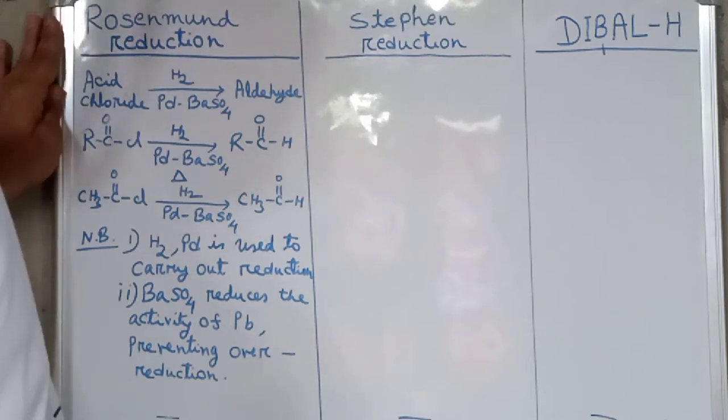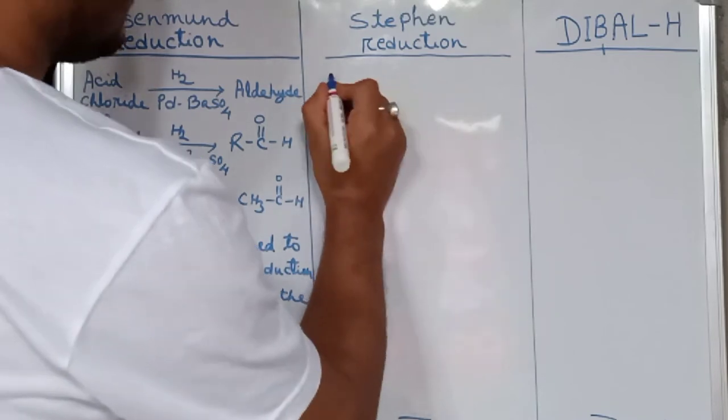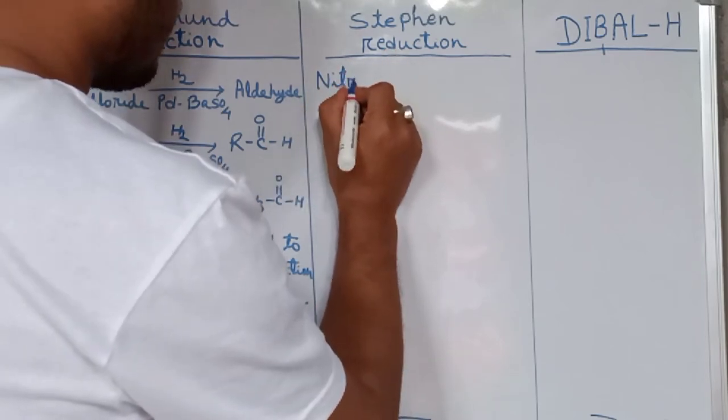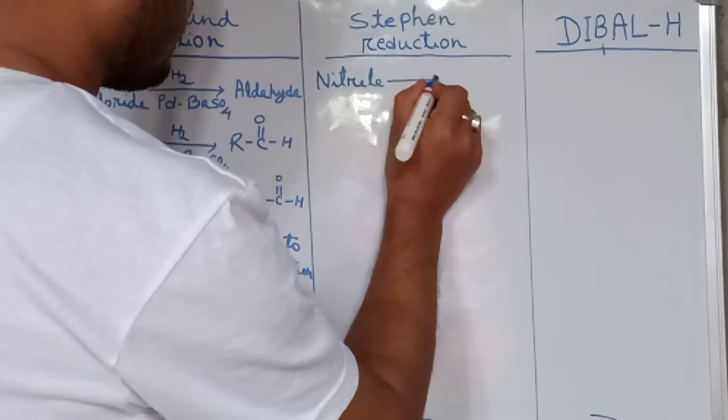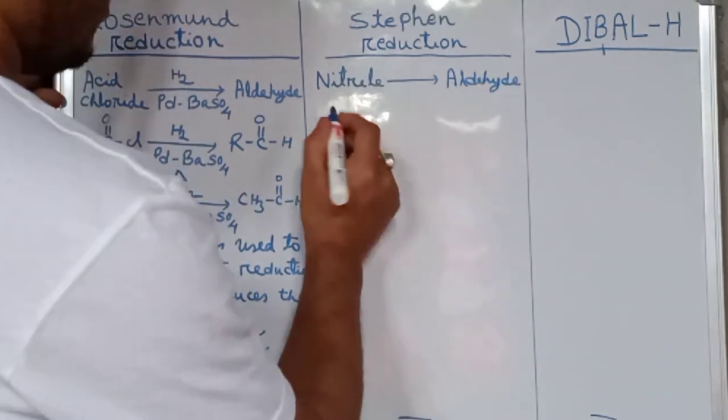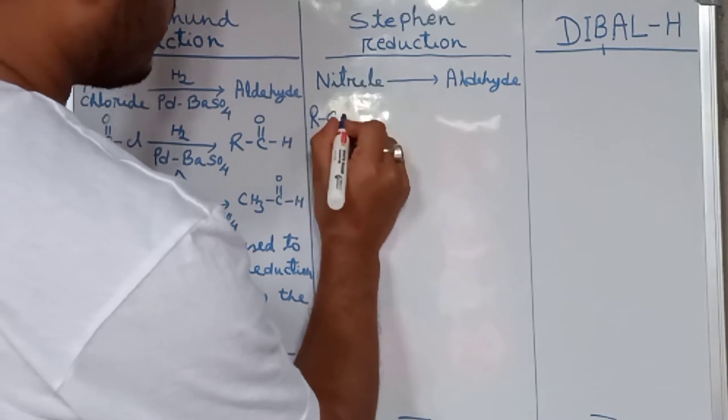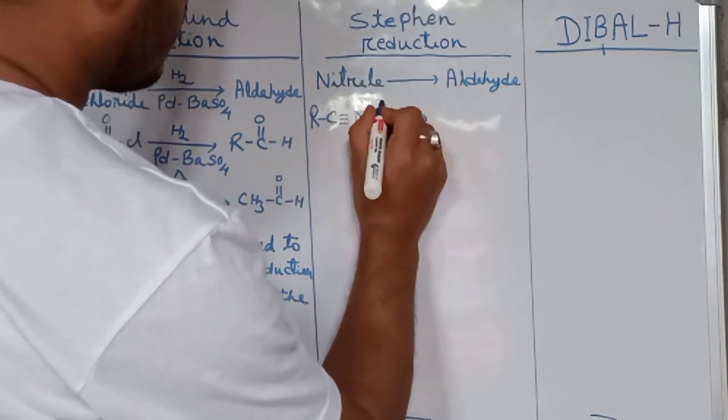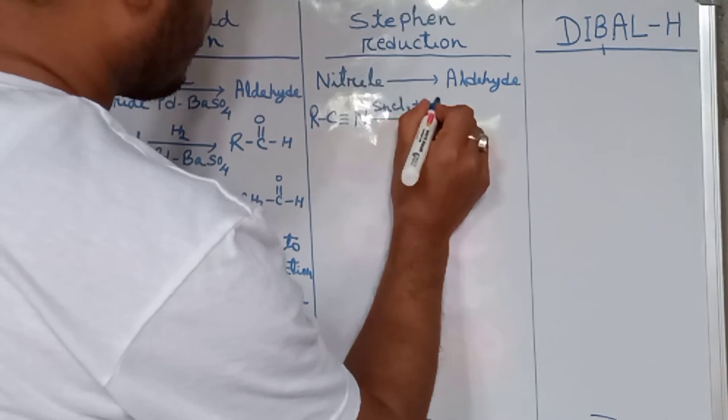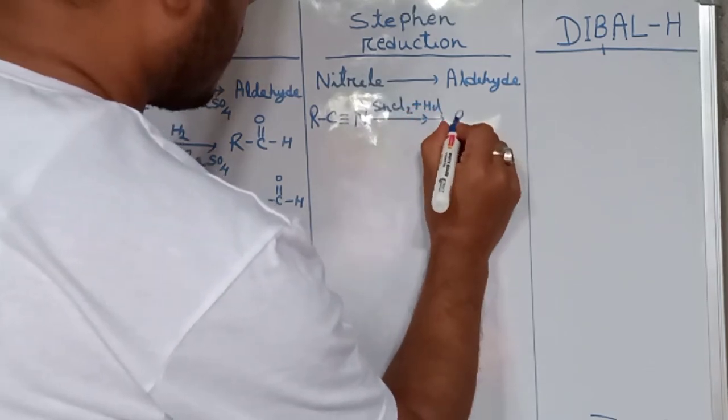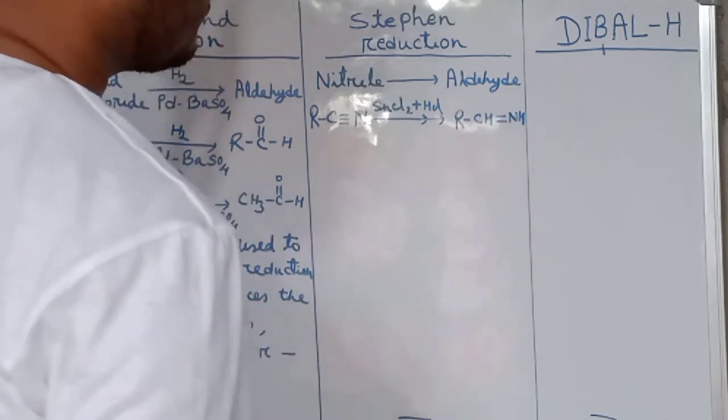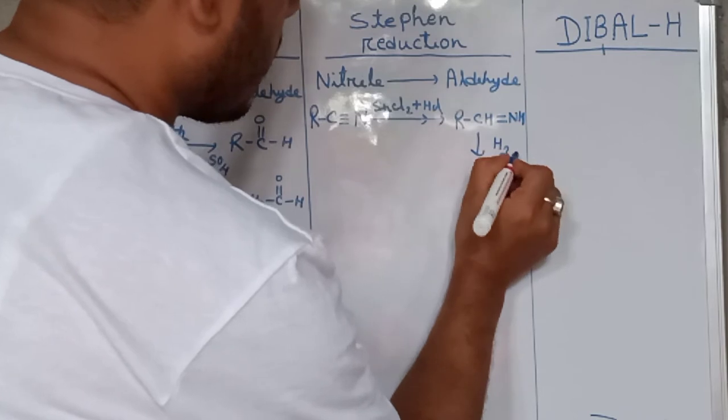Now we will discuss Stephen reduction. This reduction is used for the preparation of aldehyde from nitriles. Nitriles give aldehyde. When nitriles RC≡N react with stannous chloride SnCl2 and hydrochloric acid HCl, it gives imine RCH=NH.